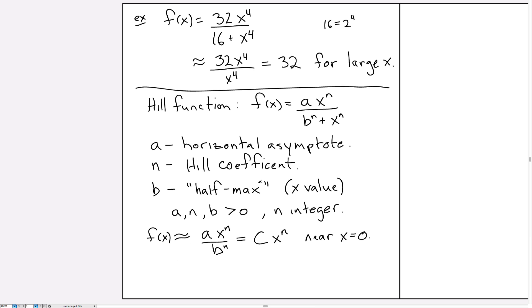And then finally, where does this half max come from? If we plug in b as the x value, then what do we get? We get ab^n divided by b^n plus b^n. And you'll notice that is just ab^n divided by 2b^n. And these b^n's cancel out, and we're left with half the value of the asymptote.